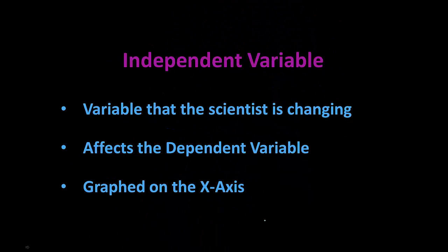Now let's talk about variables. The independent variable is the variable that the scientist is changing. It affects the dependent variable and it's graphed on the x-axis. Here's how to remember it: independent starts with the letter 'I' — it is the variable that I change if I'm the scientist.